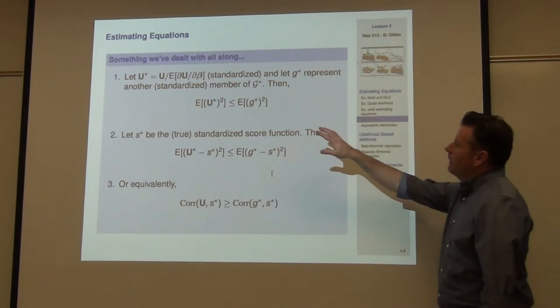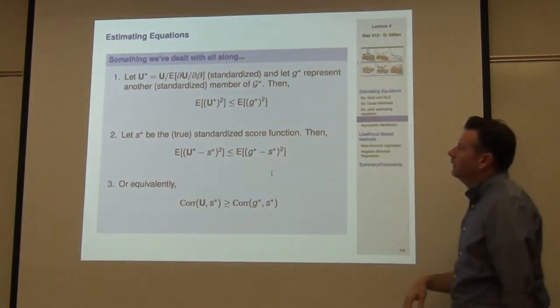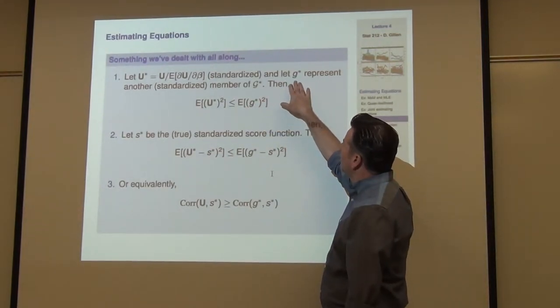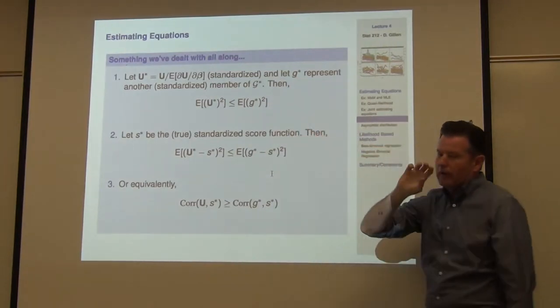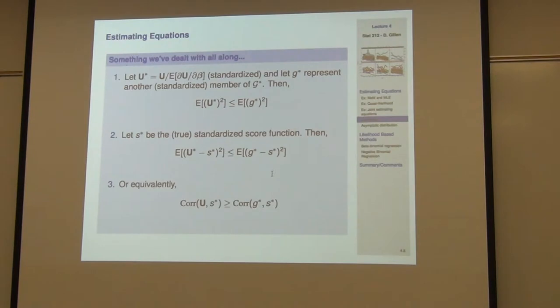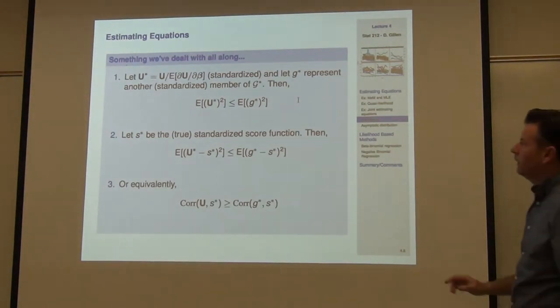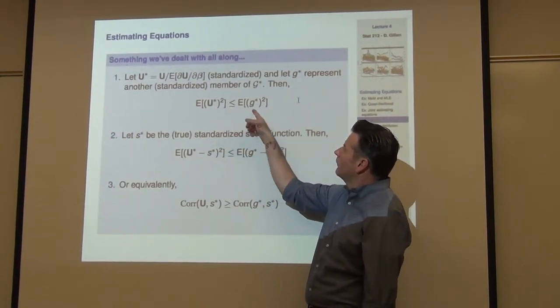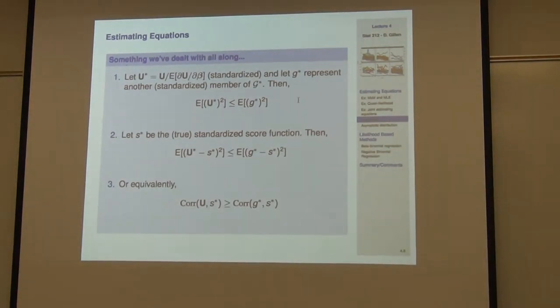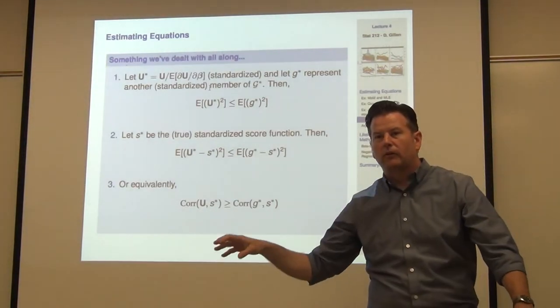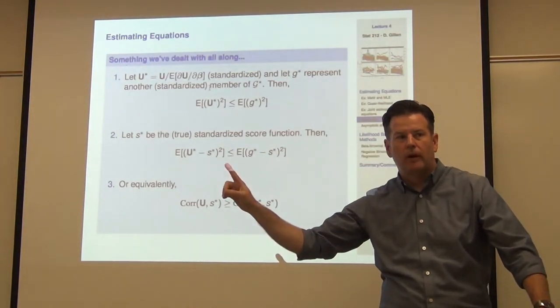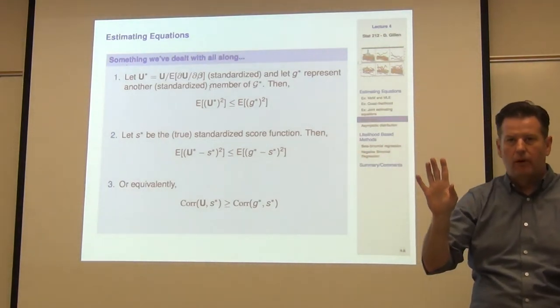It's optimal in this sense. They said, let me standardize this guy first of all so that I've got variance one. So you're taking U over the expectation of dU/dβ. And then I'm going to let G be some other member of that class of linear unbiased estimating functions. What they showed was, these guys have expectation zero, they showed that the expectation of U star squared is less than or equal to the expectation of G star squared. What does that mean for us? Variance. So it's the variance of the estimating function, saying that that particular quasi-likelihood estimating function will give you smaller variance than any other member of that class, assuming I specified V correctly.